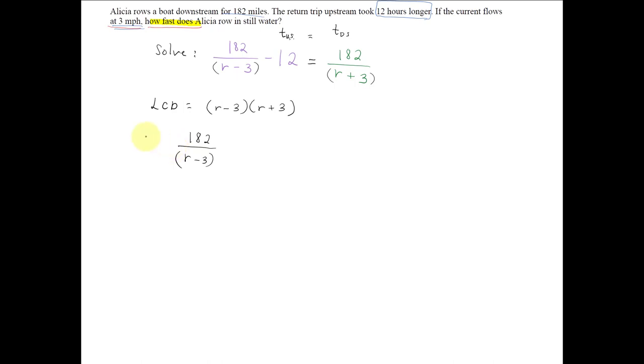We'll multiply each term in our equation by the LCD. So let's multiply this first equation by r minus 3 times r plus 3, minus the LCD r minus 3 times r plus 3 times 12, equal to 182 over r plus 3 times the LCD r minus 3 times r plus 3.